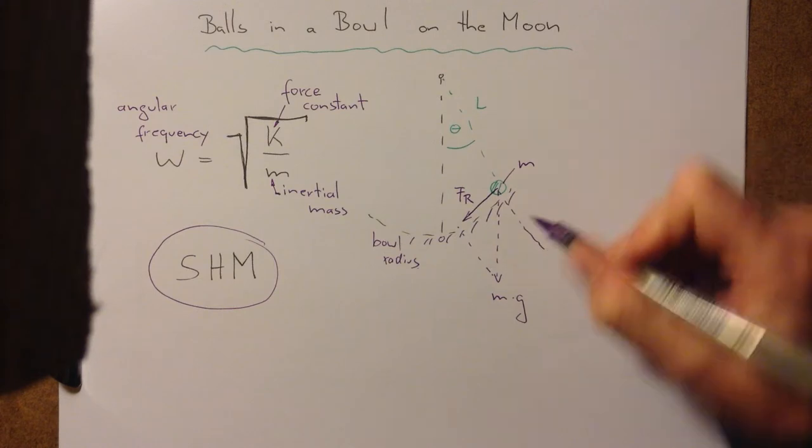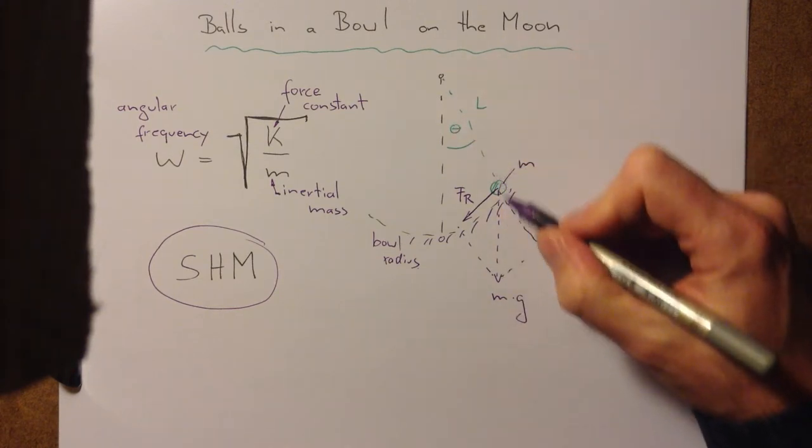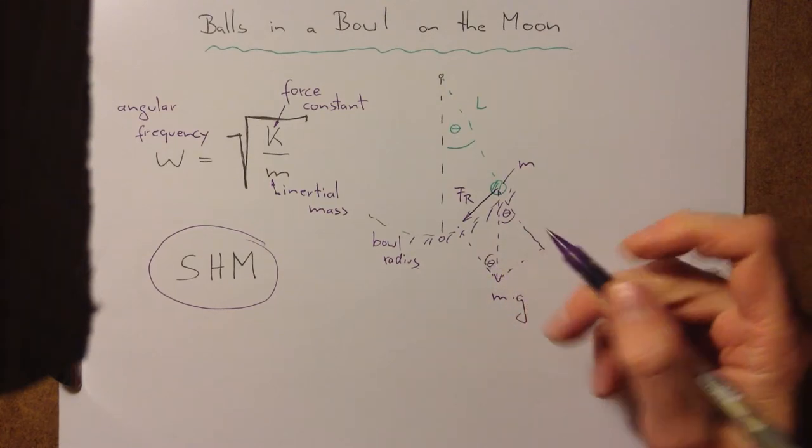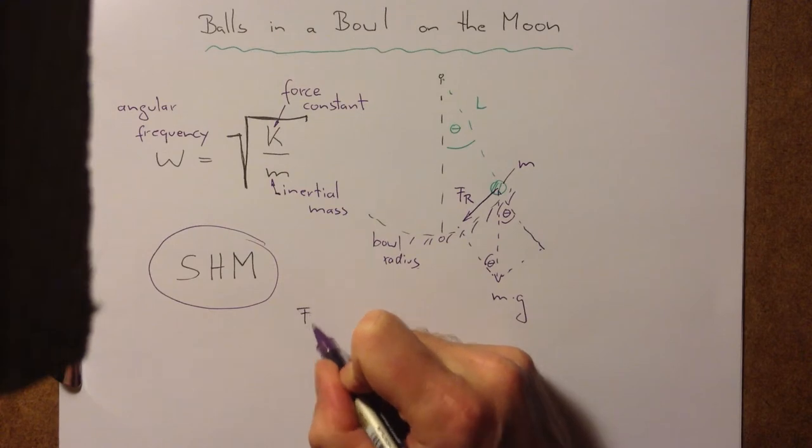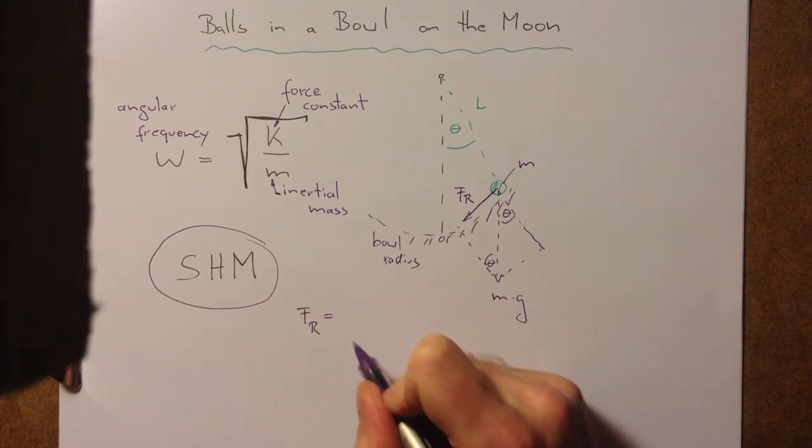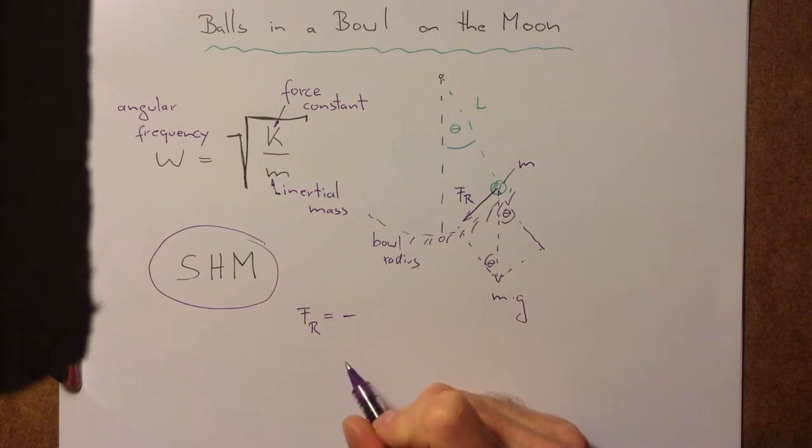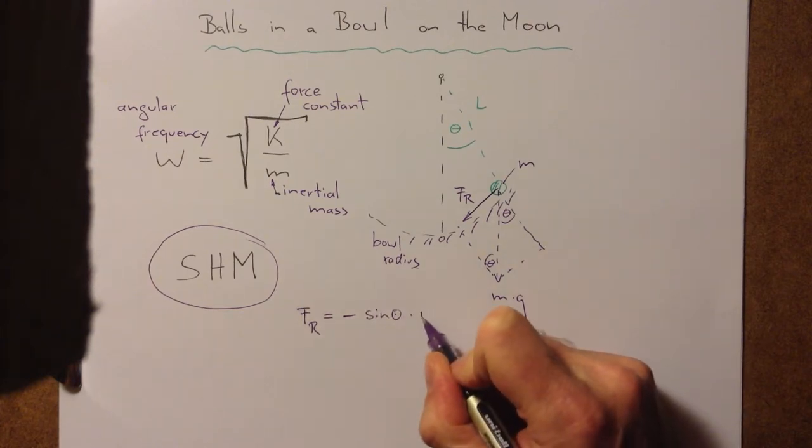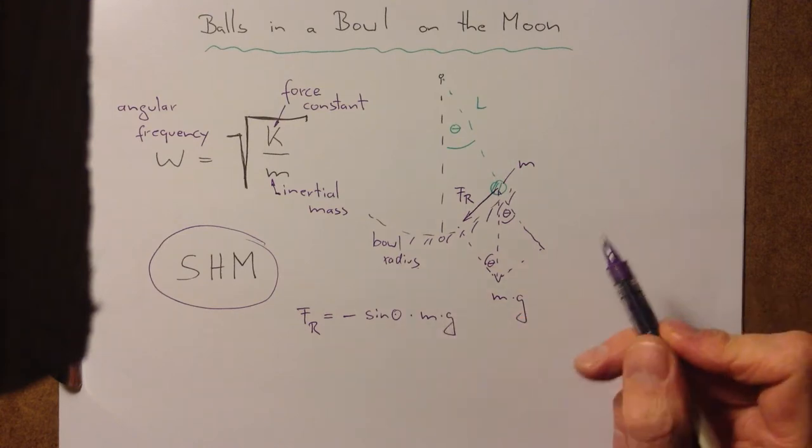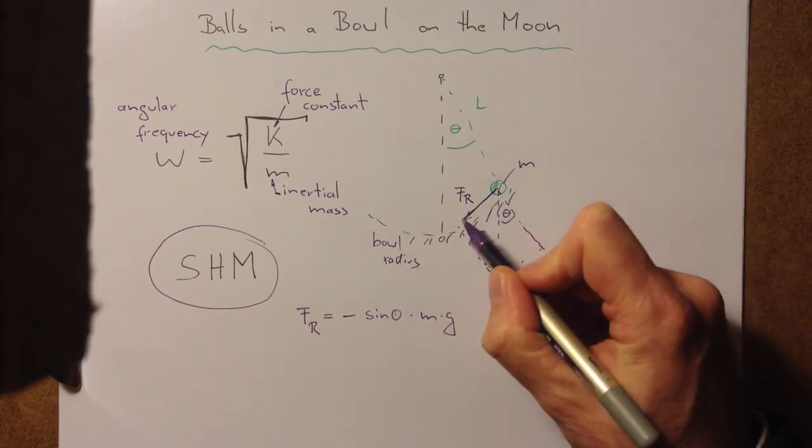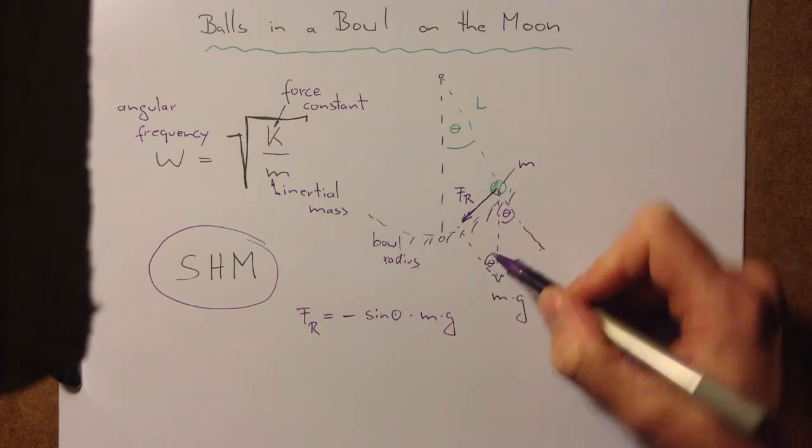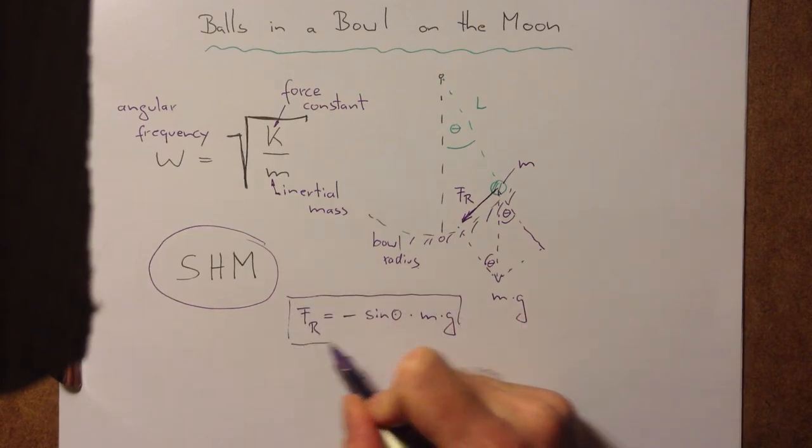And that component we can work out by considering the geometry. We have theta here, we have theta here, we have theta here again, the displacement angle. We also have it here. So therefore, the restoring force FR is equal to minus, because it always acts in opposition to the motion, and it is minus times the sine of theta times M times G. FR divided by Mg is equal to the sine of theta. Therefore, this equation holds. This is our restoring force.